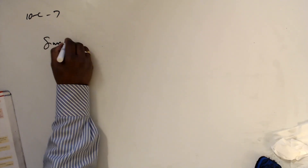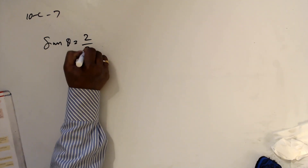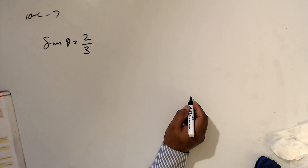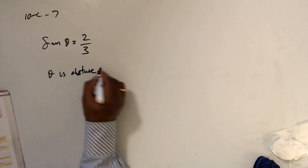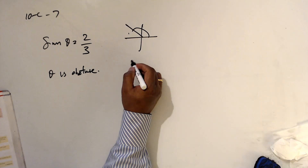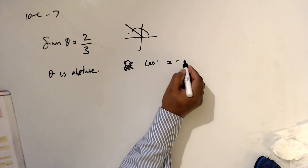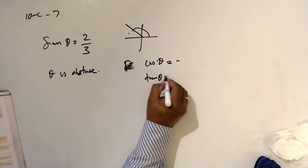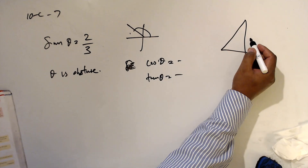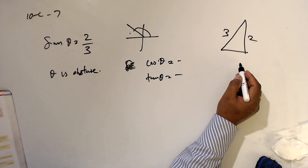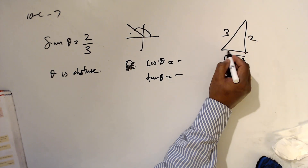Number seven: sin θ = 2/3, and θ is obtuse, meaning it is in the second quadrant. In the second quadrant, cos is negative and tan is negative. If θ were acute, sin θ = 2/3, so using Pythagoras: 3² - 2² = 5, giving square root 5.